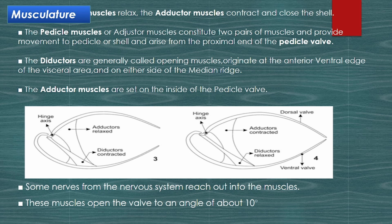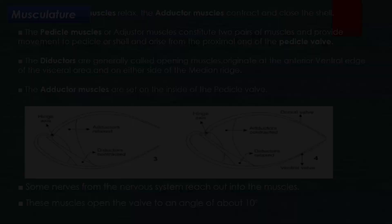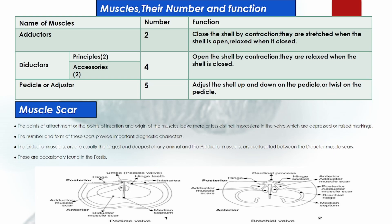The pedicle is a stalk-like, cuticle-covered appendage that is variably developed and protrudes from the pedicle valve. It is attached to the inner surface of the larger valve. Muscles, their number and function, are given in the table here. The diductor muscle scars are usually the largest and deepest of any animal, and the adductor muscle scars are located between the diductor muscle scars. Muscle scars are found in the fossil record because brachiopods usually have their shells joined together — this is the place of attachment of muscles.